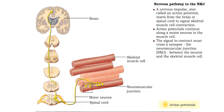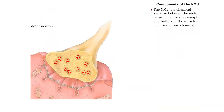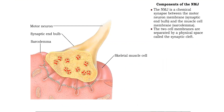The junction of these two units — the somatic motor neuron and a muscle cell — is called the neuromuscular junction. The neuromuscular junction is the chemical synapse between the synaptic end bulb of a somatic motor neuron and the sarcolemma of a muscle cell. The synapse contains a gap between the two cell membranes, called the synaptic cleft.